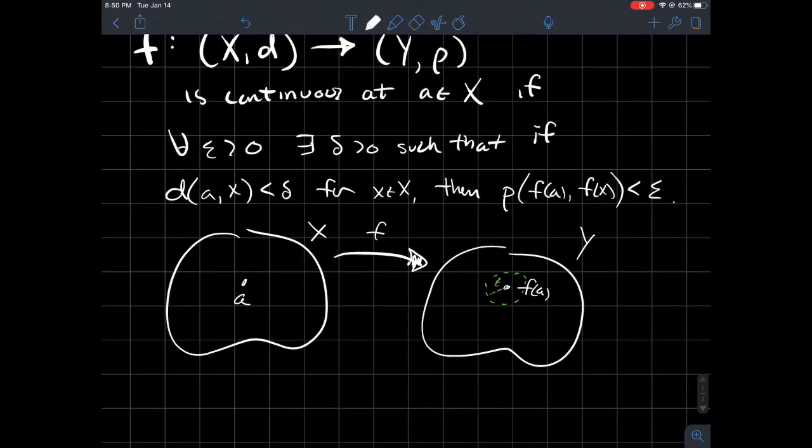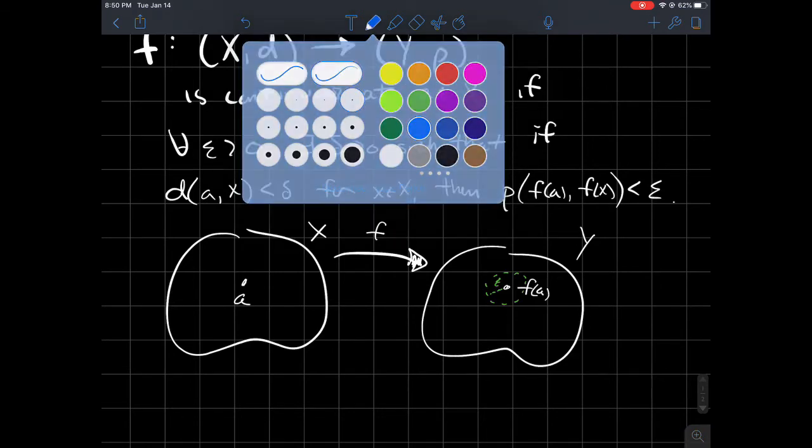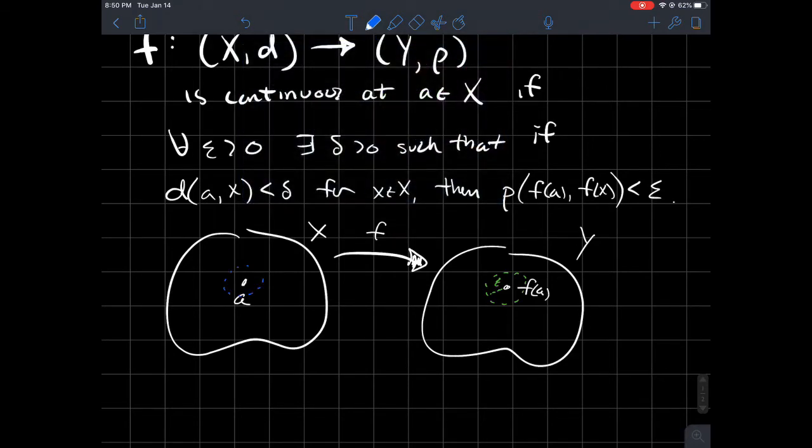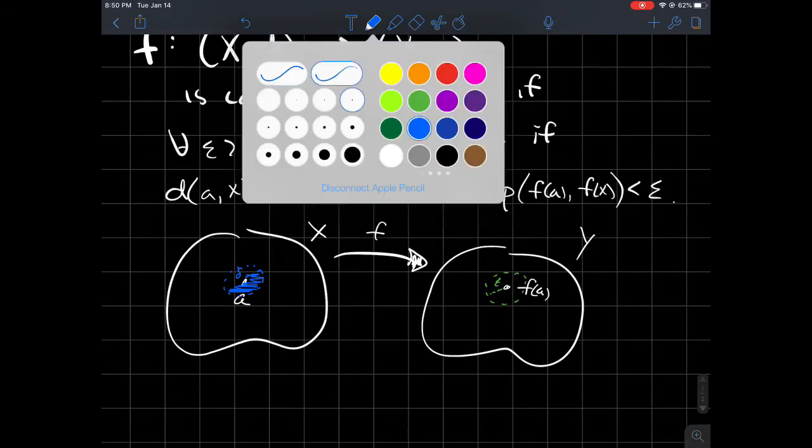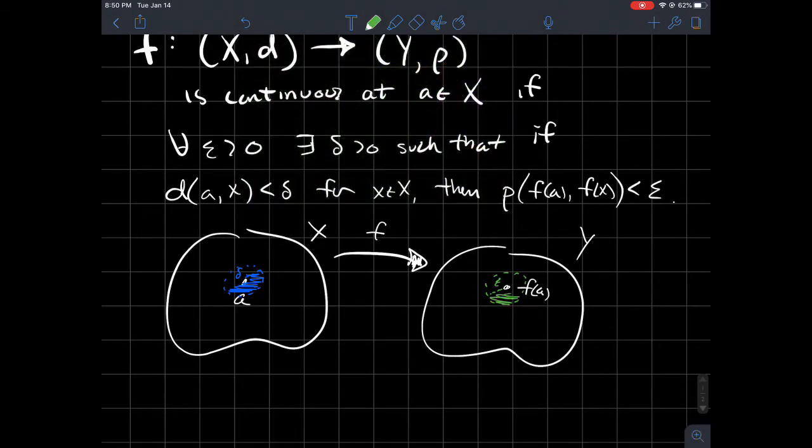You should be able to find a ball small enough, you should be able to find a radius delta that's small enough that'll guarantee that every single point in this blue ball back here gets sent to, or gets put inside of, this green ball over here on the right in the codomain, in the range.